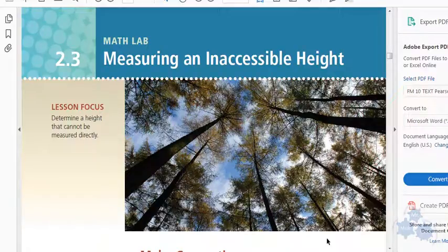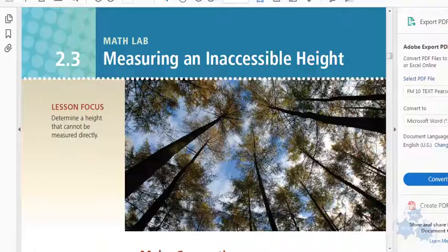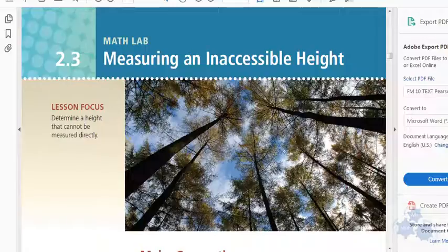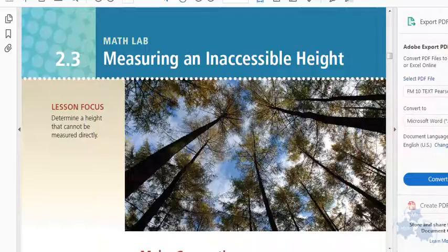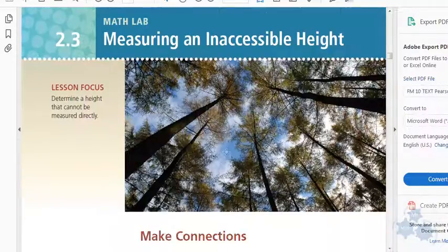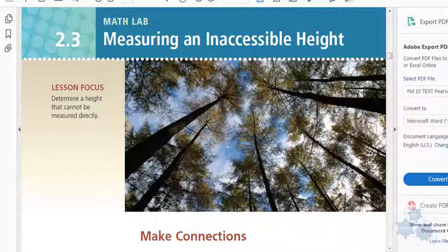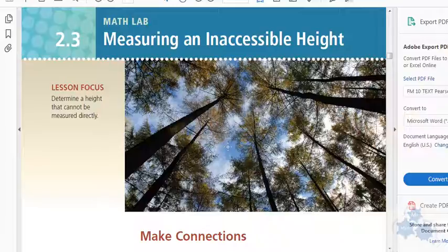So, today in Foundations of Math 10, we're talking about 2.3. It's a lab dealing with measuring an inaccessible height. How can we use math to measure heights that we can't actually climb up and take a measuring tape and directly measure? We can use trigonometry, the tangent ratio that we've been studying to do that.